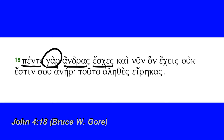'Esches' — this is from 'echo,' this is the aorist, so 'you,' second person singular, 'have had' or 'you had five husbands.'